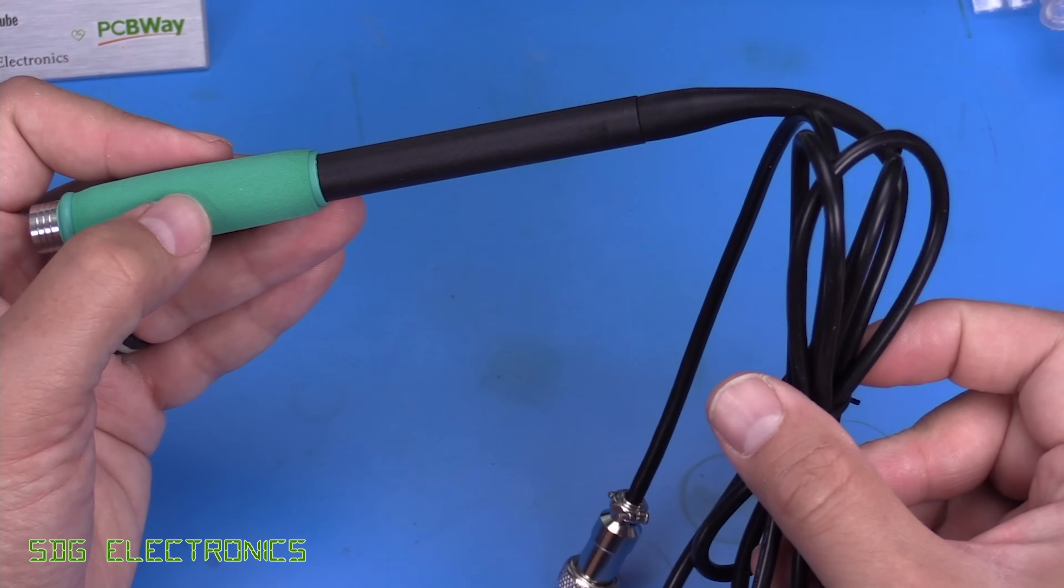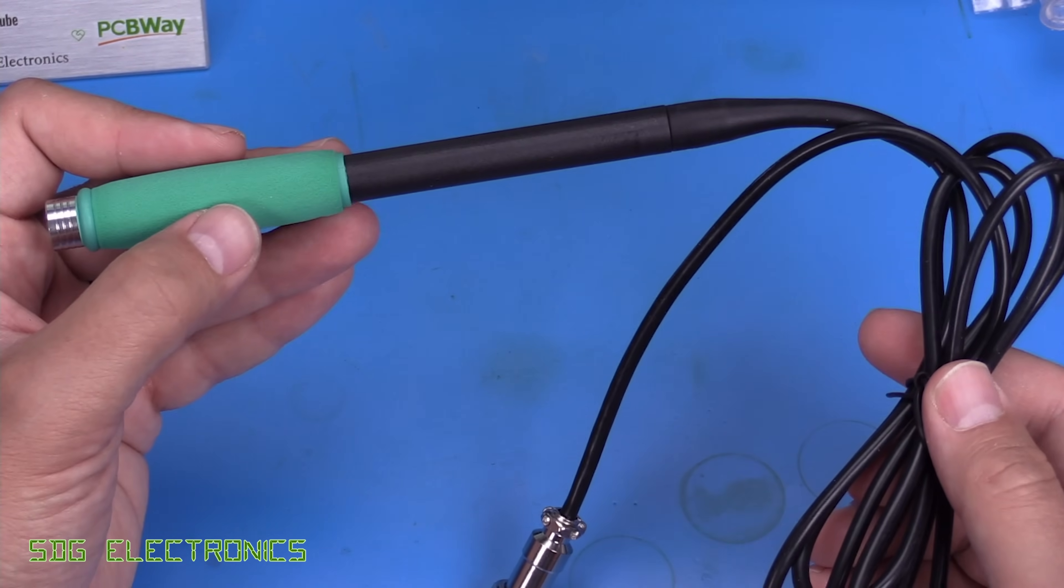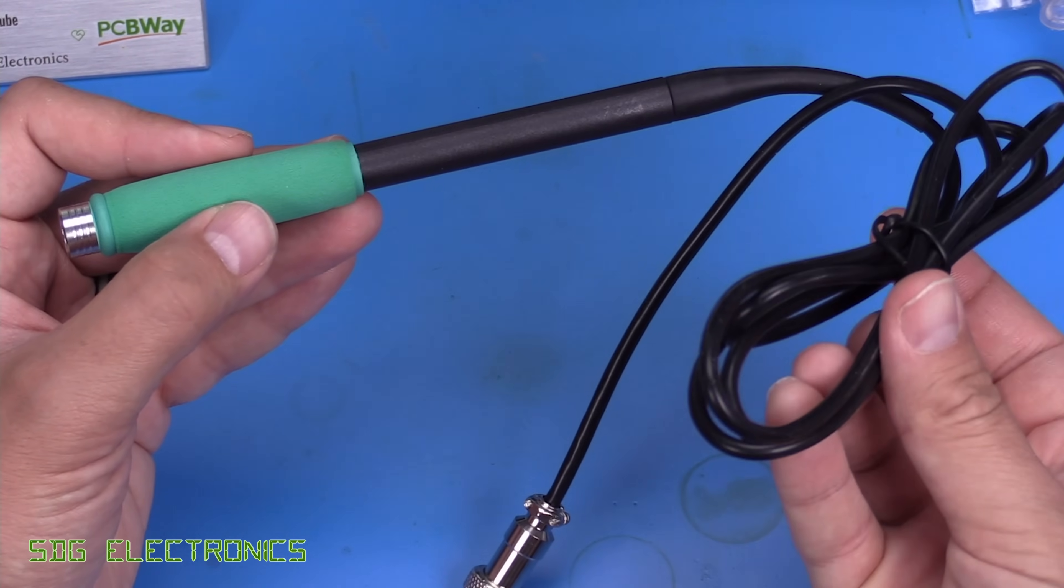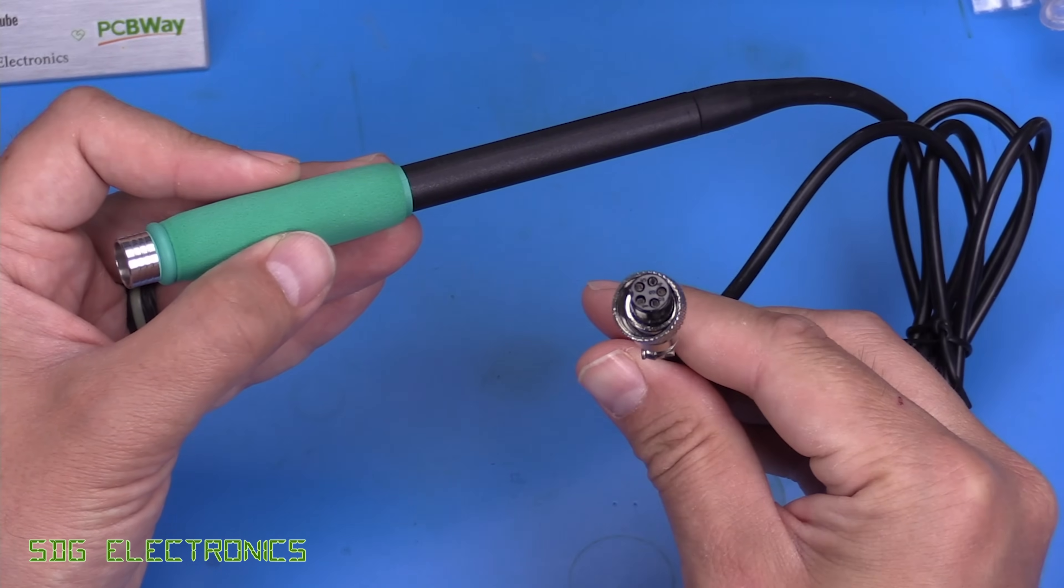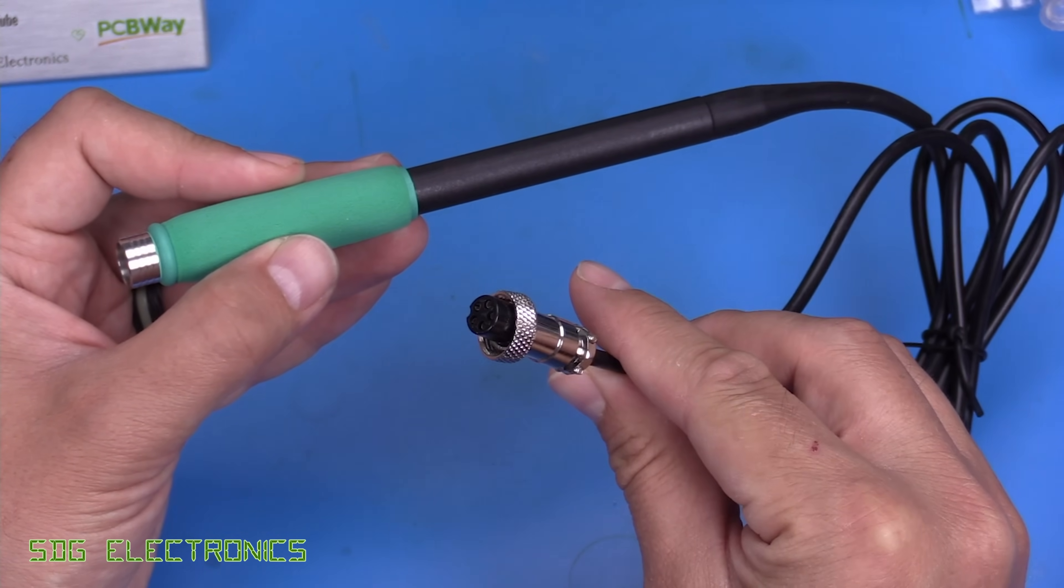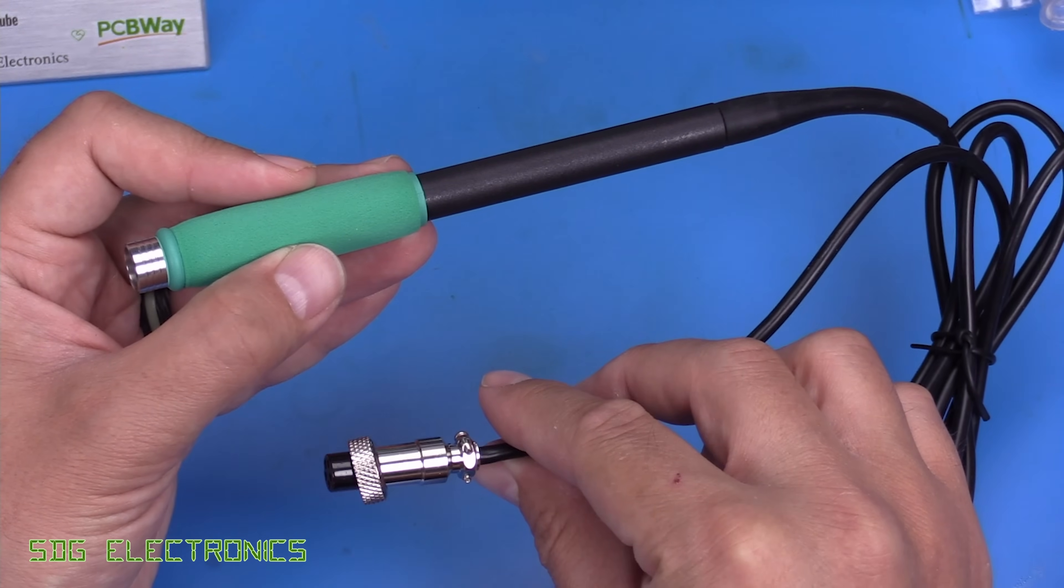I might have expected the cable to be potentially thicker if we're trying to deliver 380 watts to the cartridge. But this is just a standard handpiece, just with a slightly different connector, one of the older style connectors that we used to see on these types of soldering stations.